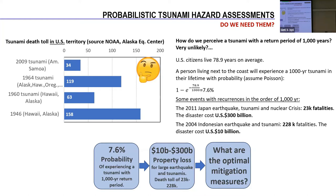With those numbers, we have to say and do something as stakeholders. For example, what will be our mitigation measures to reduce the death toll or the property loss we may face with these huge events? But before making those decisions, we have to come up with some probabilities or numbers which allow us to take decisions — and those probabilities are coming from probabilistic tsunami hazard assessment.